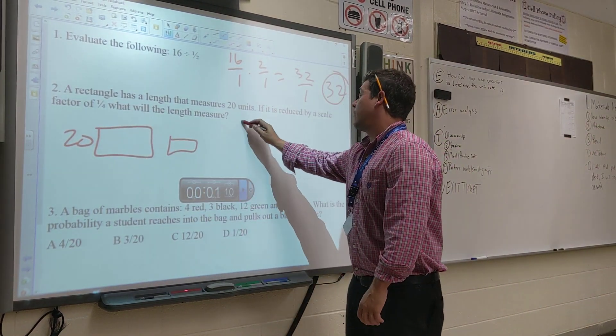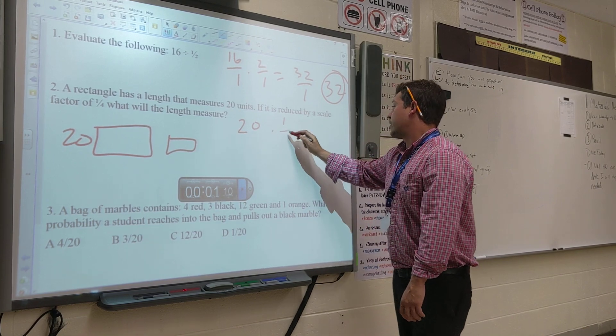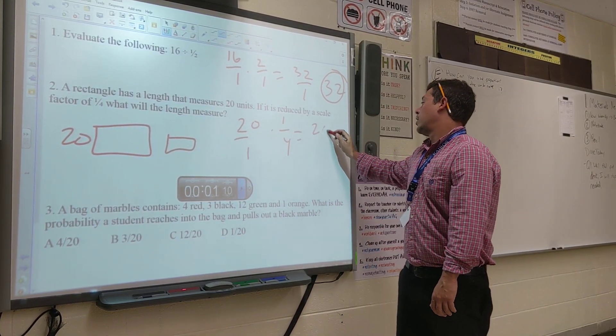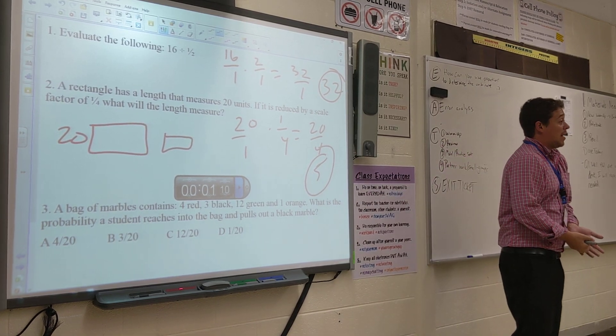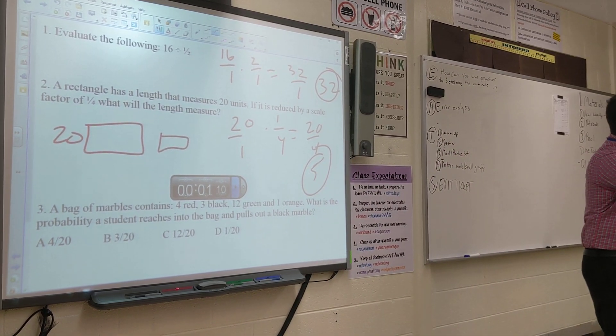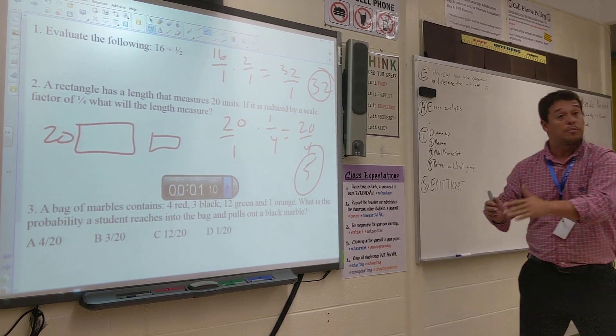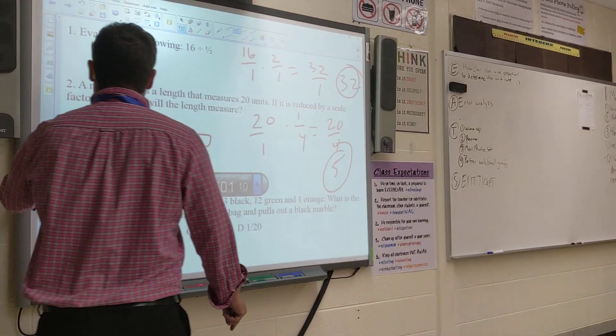And it's getting smaller by 1 fourth. So it starts at 20, getting reduced by a scale factor of 1 fourth. 20 over 4. Thumbs up if you got 5 for number 2. And it makes sense, right? 20. 1 fourth of 20 is 5. If I cut 20 into 4 even pieces, each piece would be 5.